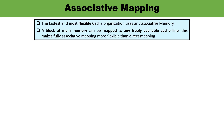What is associative mapping? Associative mapping is the fastest and most flexible cache organization that always uses associative memory. In direct mapping, each block of main memory can map to only one possible cache line — that is the drawback. But in associative mapping, there is flexibility that a block of main memory can be mapped to any freely available cache line, whichever line is available.